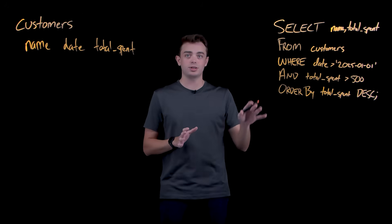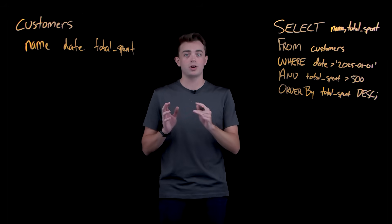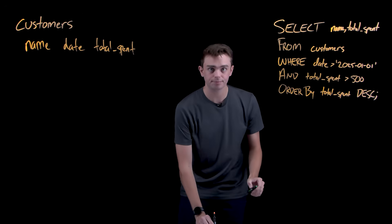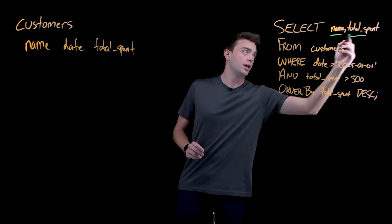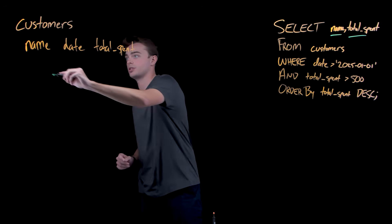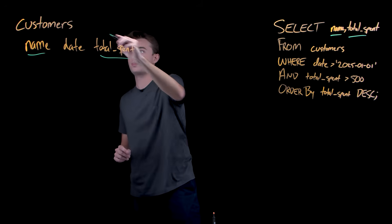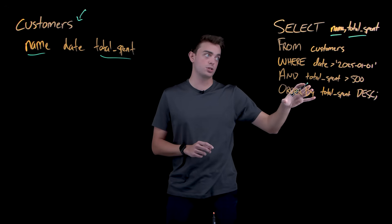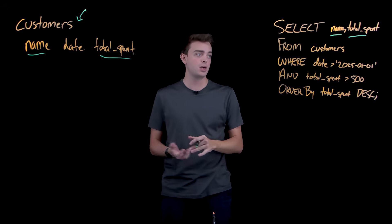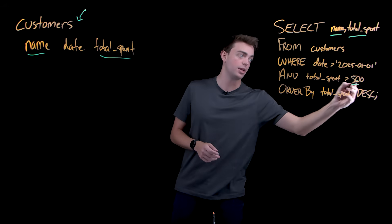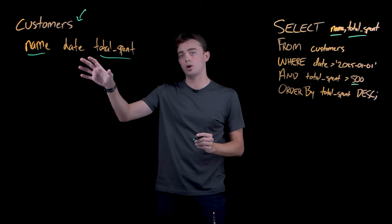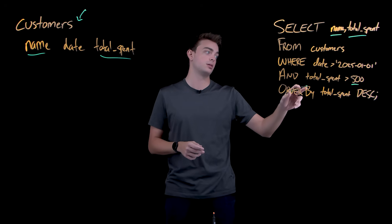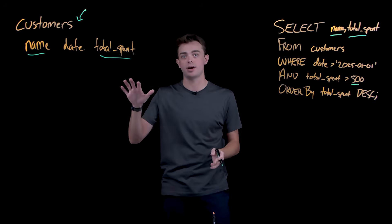But here's the thing — even this relatively straightforward query requires knowing specific SQL syntax. So let's walk through what this actually says. Select name and total spent from the customers table, where the date is greater than January 1st, 2025 — so that's from this year — and the total amount spent is greater than 500, grabbing only rows with over $500 spent.